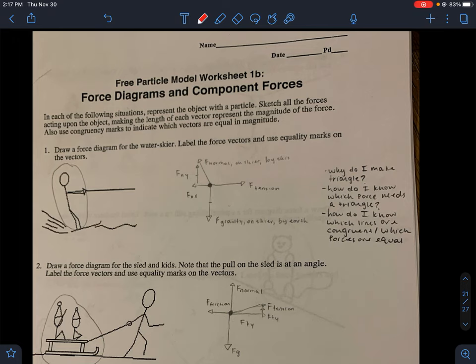So for this number one here, your first question was, why do I make a triangle? So our real forces, which I'm going to kind of highlight here, you drew, were caused by real objects, right? Normal force caused by the skis, tension by the rope, and gravity by the earth.